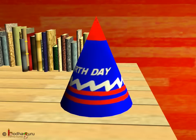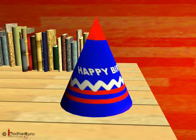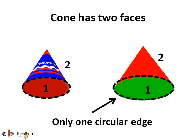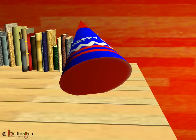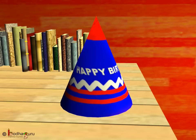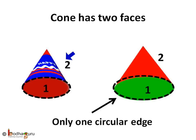If you look at the birthday hat from the bottom, it looks like a circle. The shape of the birthday hat is called a cone, like an ice cream cone. How many faces are there? One face is the circular base and the second is the rest of the surface. So two faces are there, and it has one edge where these two faces meet.